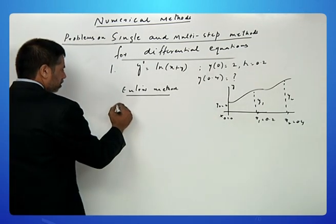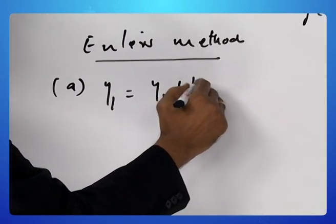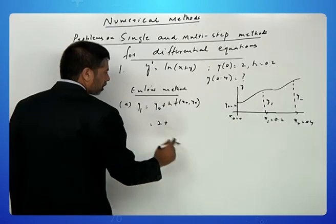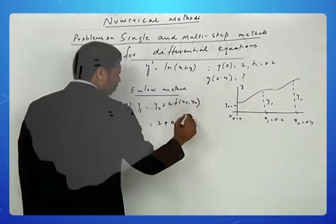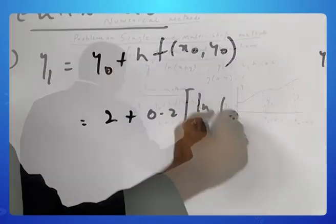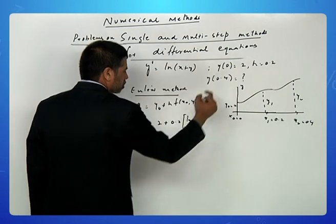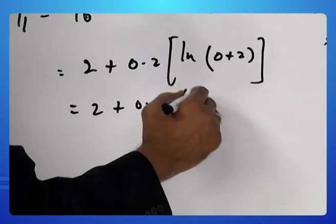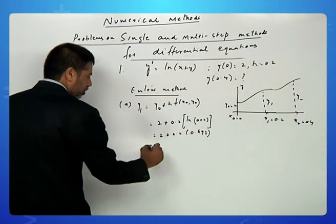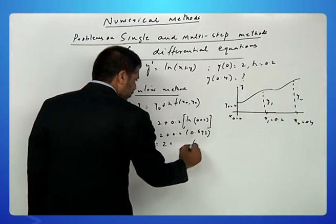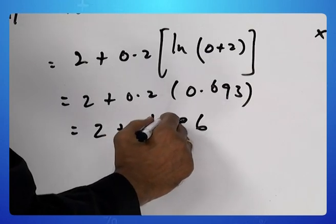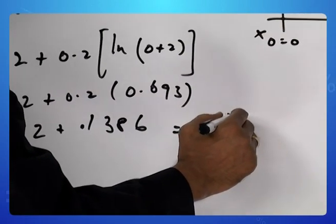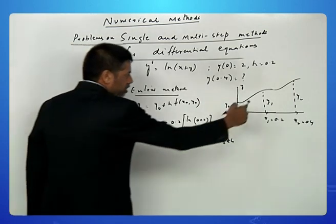For the first part, y₁ = y₀ + h·f(x₀, y₀). y₀ is 2, h is 0.2, and the function is log(x + y). So this becomes log(x₀ + y₀) = log(0 + 2) = log 2. Since log 2 ≈ 0.693, we get 2 + 0.2 × 0.693 = 2 + 0.1386 = 2.1386. So the estimate of y₁ is 2.1386.